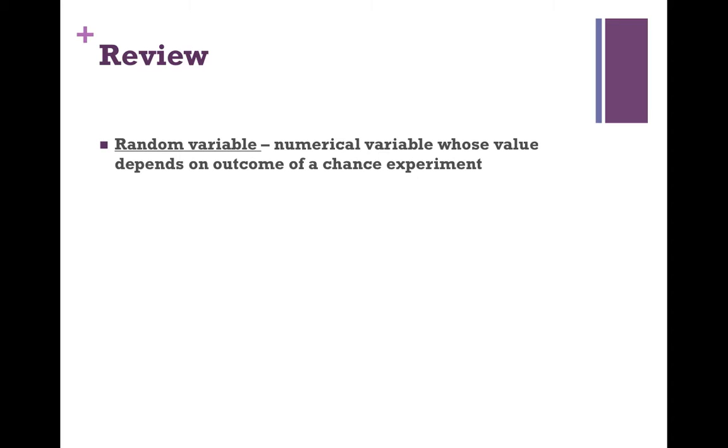Starting with: what is a random variable? It's a numeric variable whose value depends on the outcome of a chance experiment. Let's say our chance experiment is studying grocery stores and we want to know how many items people buy. If I ask everyone who comes out of the grocery store how many items they bought, that's my chance experiment. The number of items purchased is a random variable because it does not have one specific value — the value depends on the person that I ask. The first person might have bought zero items; the next might have purchased 20 items.